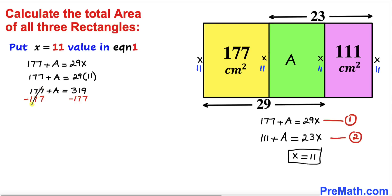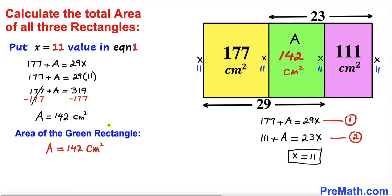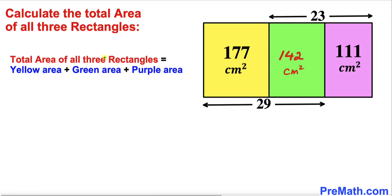Multiplying 29 times 11 gives us 319. Subtracting 177 from both sides, our A value turns out to be 142 centimeter square. So the area of the green rectangle is 142 centimeter square.